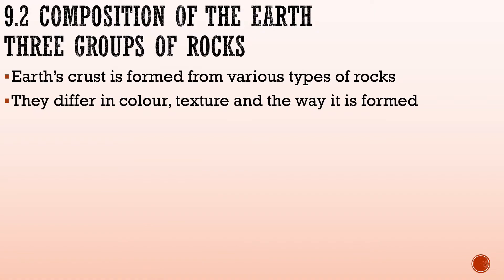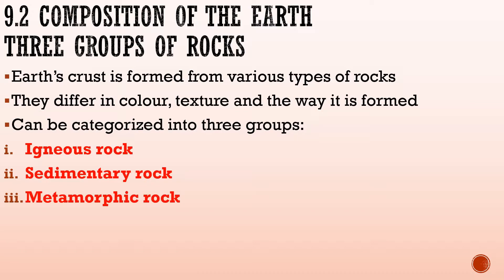Our earth's crust is formed from various types of rocks. They differ in colour, texture and the way they are formed. They can also be categorised into three main groups, namely the igneous rock, sedimentary rock and metamorphic rock.